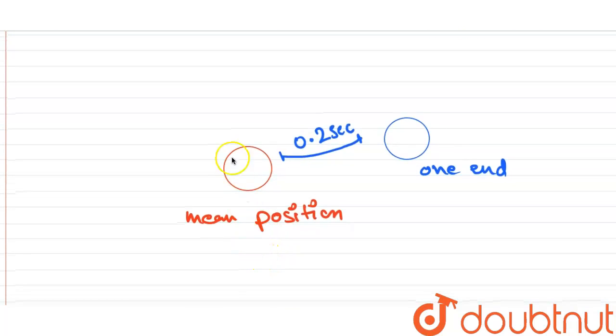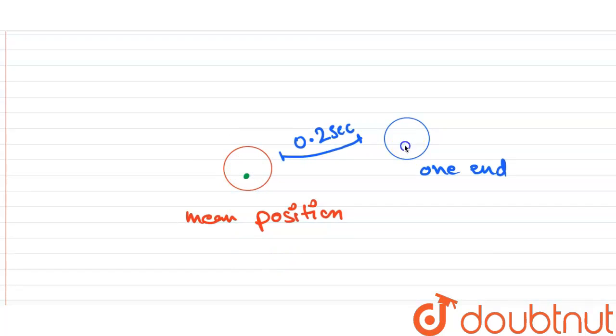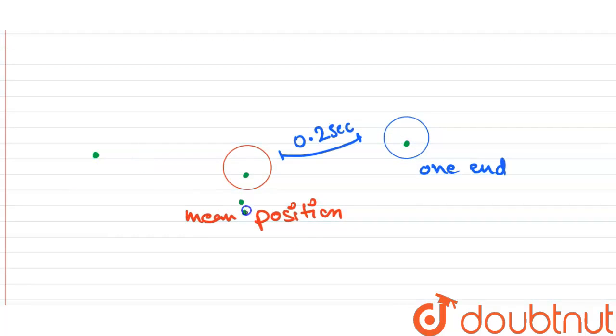From mean position to one end, then back to mean position, then to the other end, and finally back to mean position. The time taken by both ends will be equal, so reaching from mean position to the other end will also take 0.2 seconds.